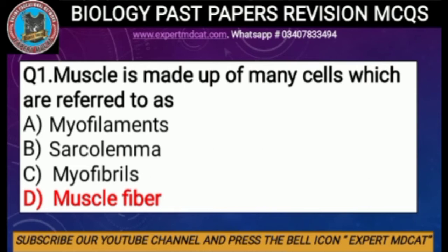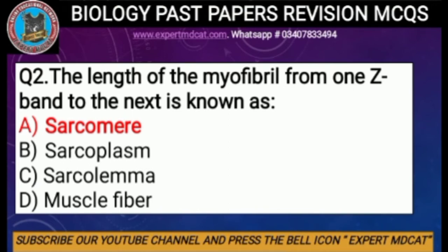Question number two: the length of the myofibril from one Z band to the next is known as — the correct option is A, sarcomere. Sarcomere is the smallest contractile unit. The segment between two neighboring Z lines is a sarcomere.